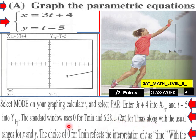Along with the usual ranges for X and Y, the choice for 0 for T min reflects the interpretation of T as time. So here would be our graph: 3t plus 4 and then Y1T with t minus 5, and this is what you get.